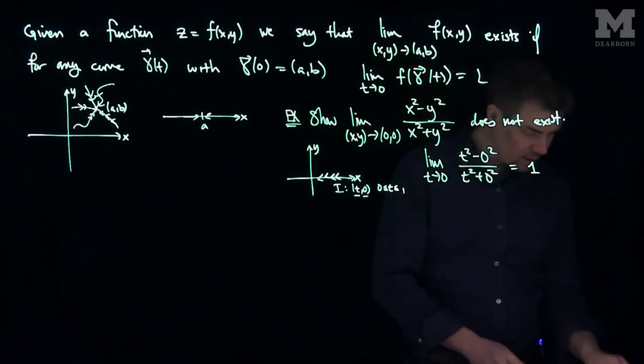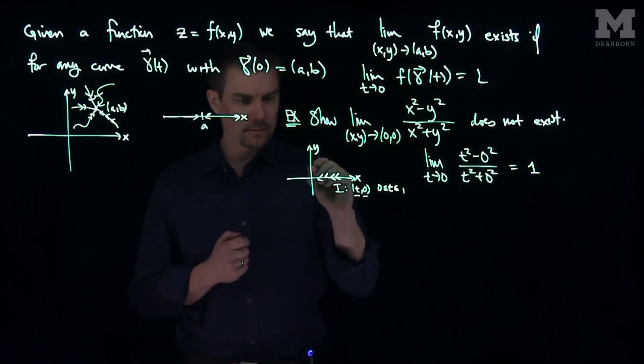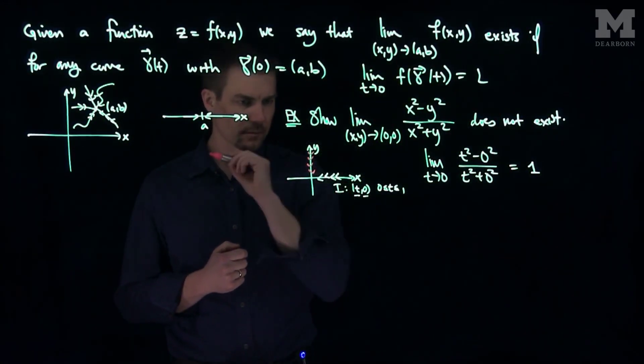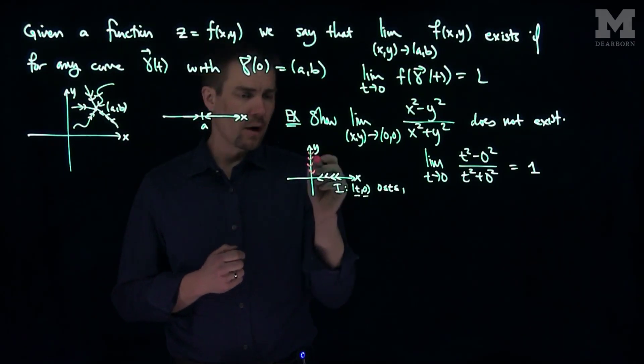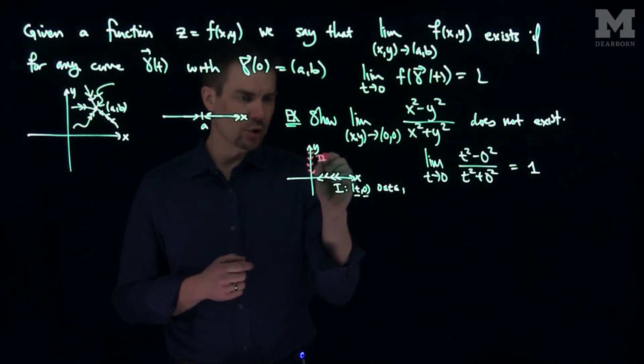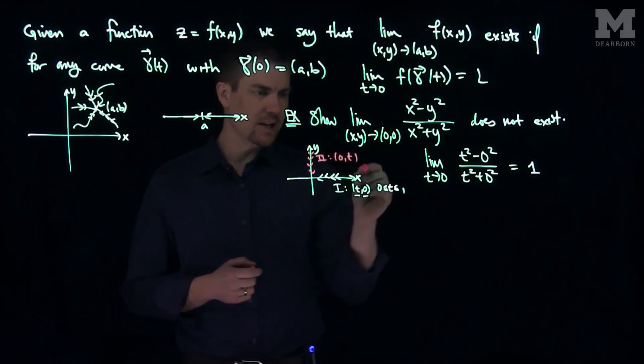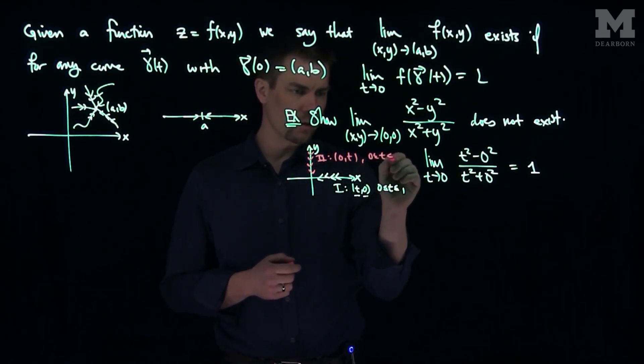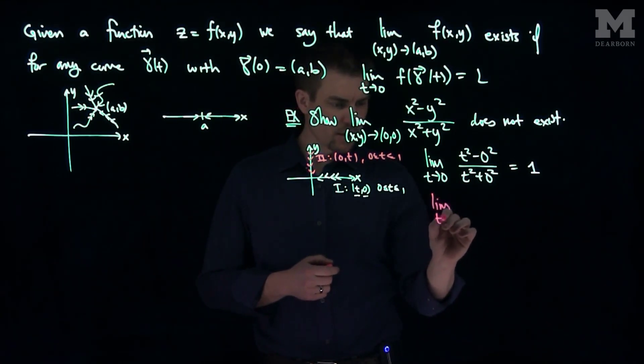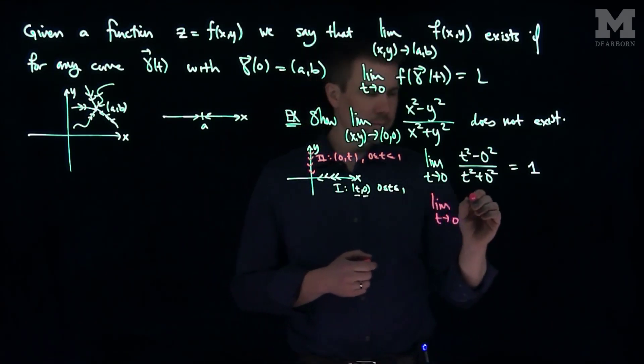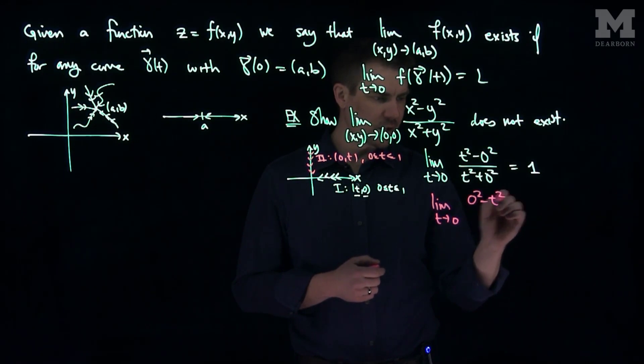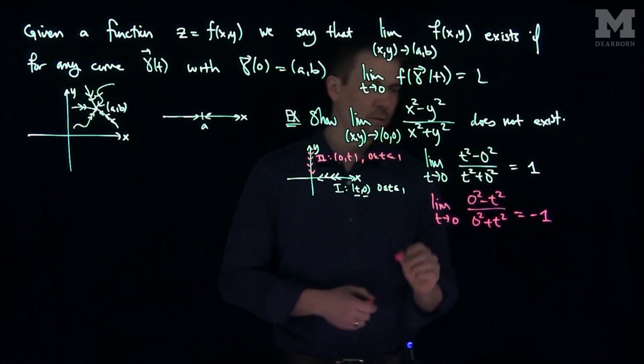If we look along the limit along the y-axis, what will we have? Along the y-axis, we'll call this curve number 2. This will be the curve 0 comma t, same range of t, t between 0 and 1. Along that trajectory, we have the limit as t goes to 0 of 0-squared minus t-squared over 0-squared plus t-squared. That will simplify to negative 1.